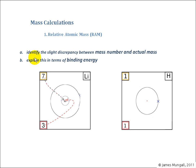Okay, so first thing here, identify the slight discrepancy between mass number and actual mass. Here I've got a lithium atom and it's got three protons in there and four neutrons. So in total it's got seven protons and neutrons and that there we would call the mass number.